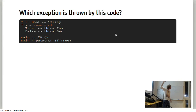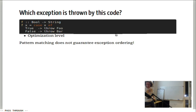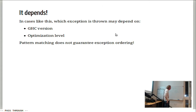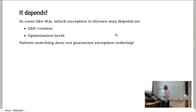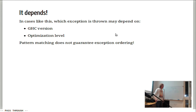In this simple case it will always be foo. But in general, in cases like this, it depends — it depends on the GHC version and the optimization level. The core problem is that pattern matching does not give you proper exception ordering. This kind of issue happens when you have lots of code and lots of exceptions, compiling with O2, and then it fails on your server.